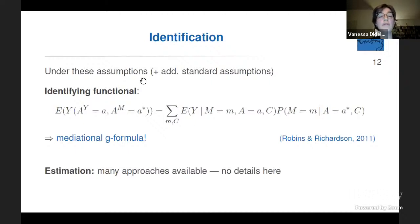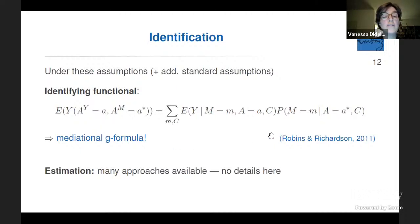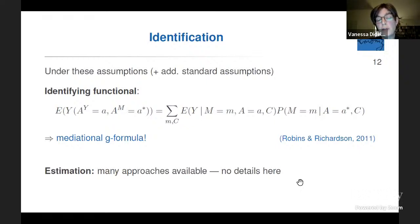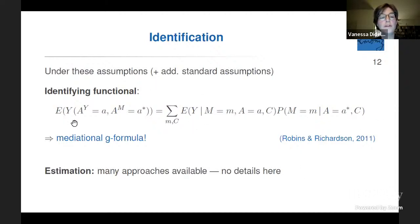Under these assumptions, plus standard causal inference assumptions — assuming A was randomized — we obtain the identifying functional: the well-known mediation g-formula. Once we arrive at this formula, many approaches available in the literature can estimate it. The key difference is the story we tell about the treatment and the actual interventions in our hypothetical trial.